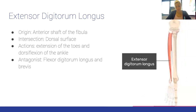The extensor digitorum longus: Origin: anterior shaft of the fibula. Insertion: dorsal surface of the toes. Actions: extension of the toes and dorsiflexion of the ankle. Antagonist: flexor digitorum longus and brevis.